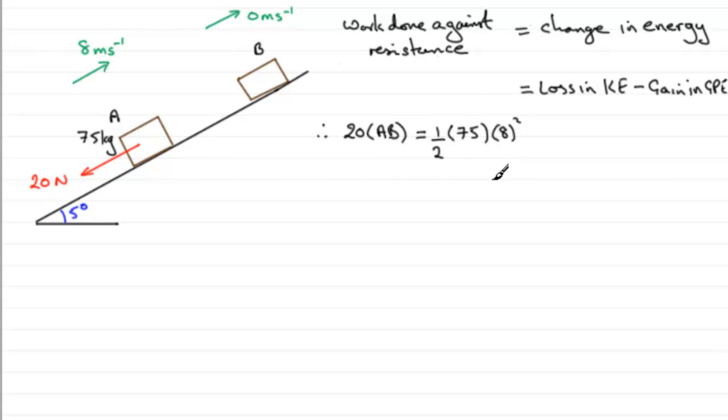Now we've got minus the gain in gravitational potential energy. Potential energy is mgh, gravitational potential energy. So it will be mg, so mass is 75, we know that g is 9.8, but we've got h, this distance that it's risen from A to B, this vertical distance. So how are we going to get that?